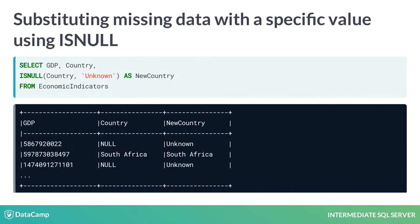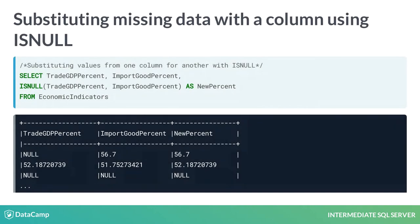Sometimes, you want to replace missing values in a column with a specific value. To do so, you can use the isNull function. You pass the column name and the value to replace isNull, and this will replace the missing values in the column with the given value, as shown here. Note that you can replace all missing values with only one value. You can also use isNull to replace missing values in one column based on a different column. Here, we are replacing all the values in Trade GDP% with the corresponding row values from Import Good%. The replacement will only be performed if the value in Trade GDP% is null.